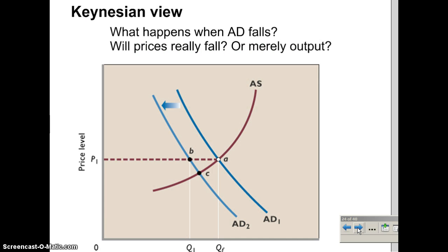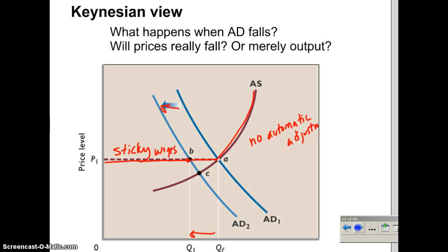Another piece of Keynes' view is that he questioned the idea of flexible wages and prices. He said wages and prices are not flexible — they are sticky. If wages are sticky and not downwardly flexible, then the AS curve doesn't look like the neoclassical curve; it actually looks horizontal. Decreases in aggregate demand do not depress wages and prices — all they do is reduce equilibrium output levels. With sticky wages and contracts in place, there is no automatic adjustment.